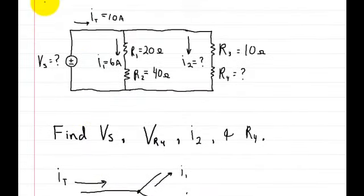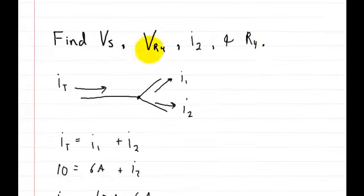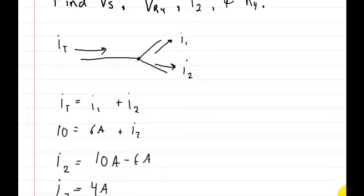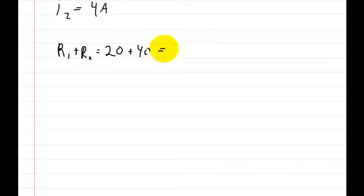Now if we combine these two resistances, R1 and R2, that will help us figure out the total voltage here. So R1 is 20 ohms, and R2 is 40 ohms, so let's scroll down a little more. So the total resistance in that branch, or R1 plus R2, is going to be equal to 20 ohms plus 40 ohms, and that's going to be equal to 60 ohms.